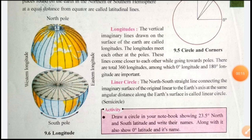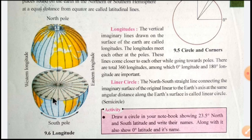Students, we have already completed our three parts. Now today we will start with Longitudes. The vertical imaginary lines drawn on the surface of the Earth are called Longitudes. Here in the picture, the vertical — meaning standing — lines drawn on the surface of the Earth are called Longitudes.